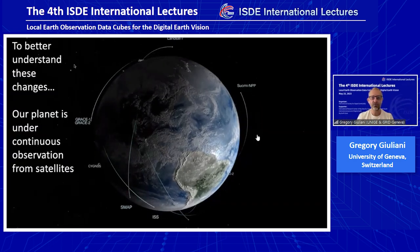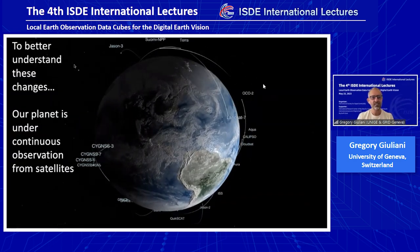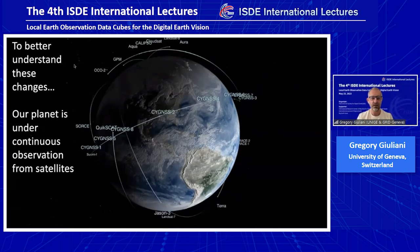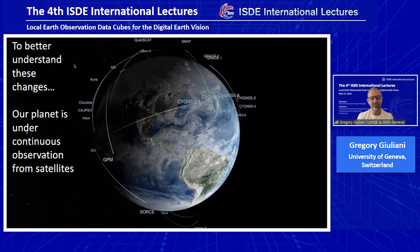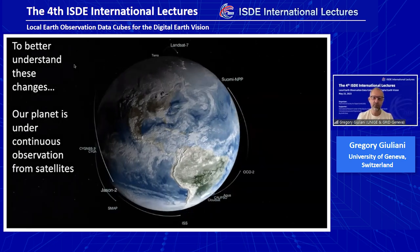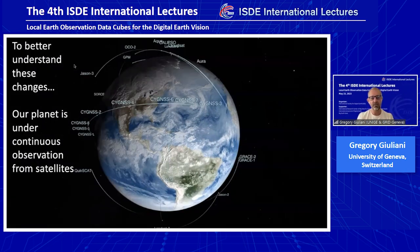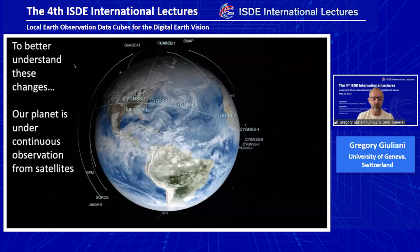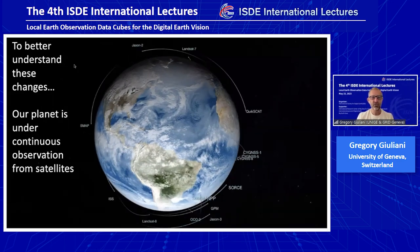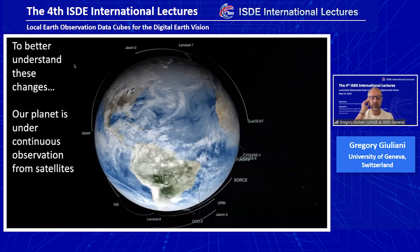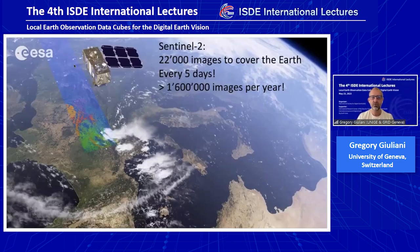Since the 1970s, we have been under continuous observation from satellites. This is just the American fleet, but there are many other satellites — Chinese satellites like SDG-SAT, all the satellites operated by the European Space Agency, by JAXA, and so on. Just as a quick example, if we take just the Sentinel-2 satellite from the Copernicus mission, it takes more or less 22,000 images to cover the Earth every five days, meaning a little bit less than 2 million images per year are generated with this single satellite.